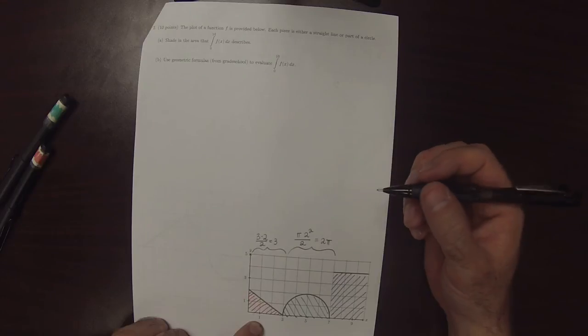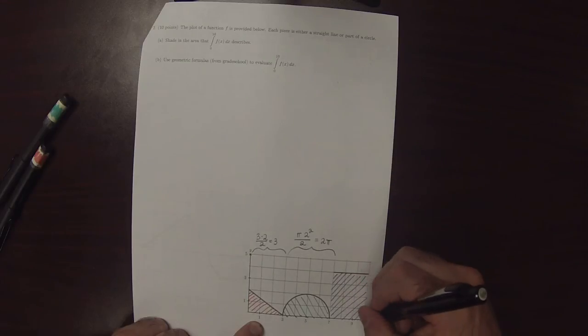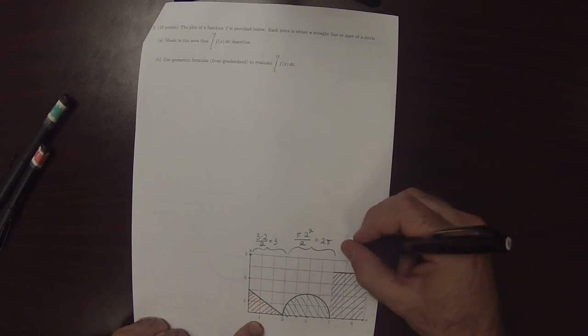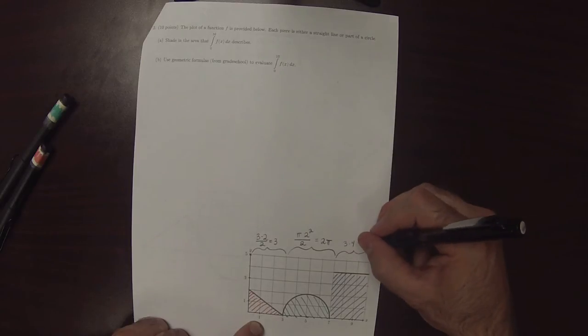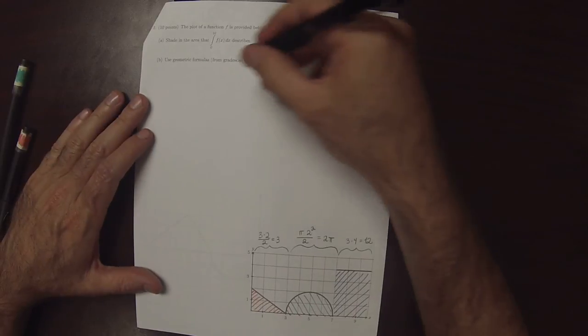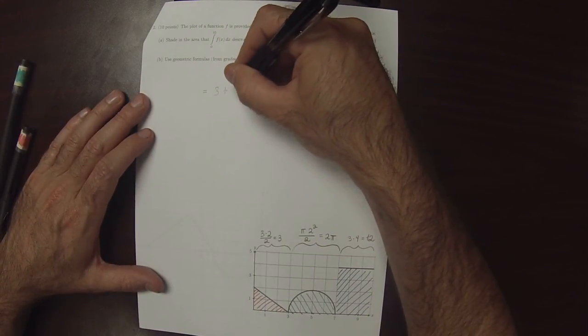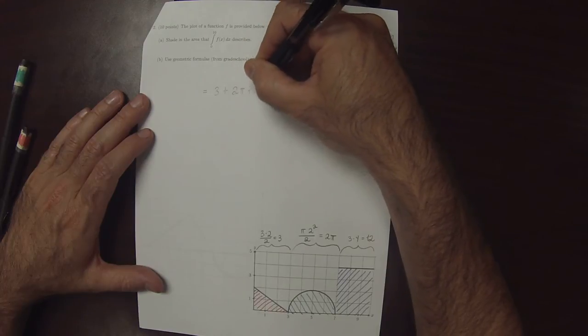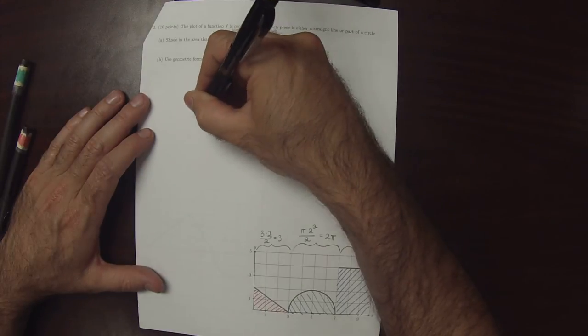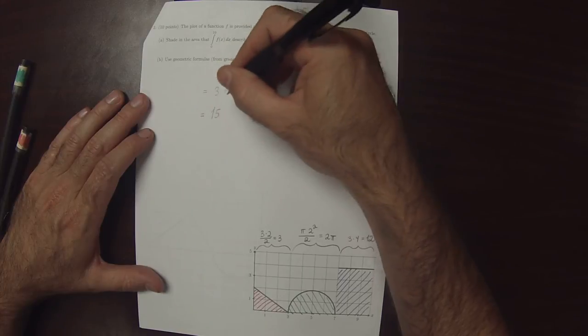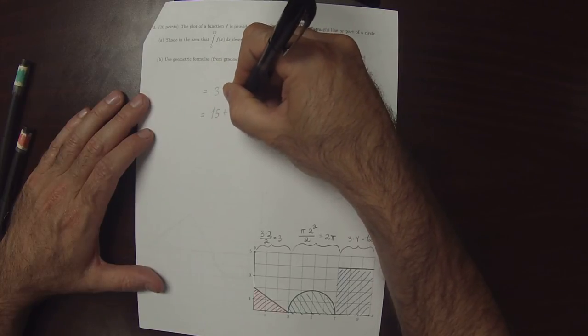And then this is base times height. So, that would be 3 times 4 is 12. So, the answer to the exercise is 3 plus 2 pi plus 12, which is to say, 15 plus 2 pi.